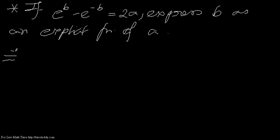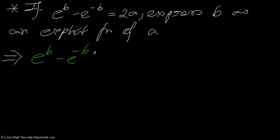So what do we do here? We have to show b as an explicit function of a. To start with, we will begin with the given equation: e to the power b minus e to the power minus b equals 2a.